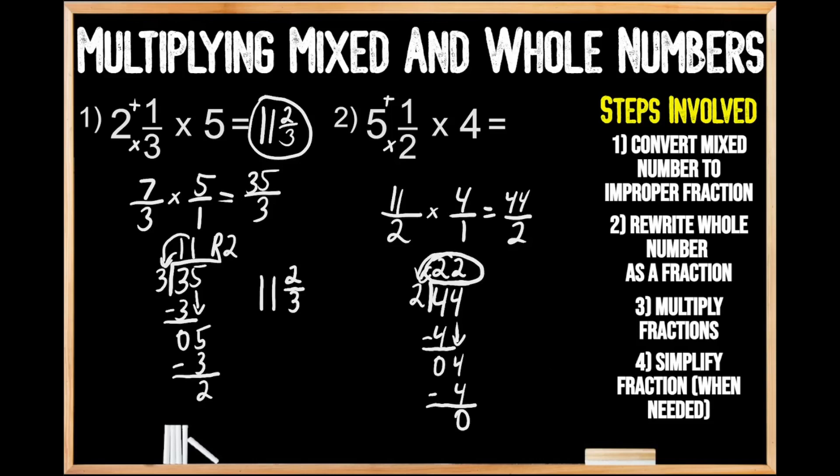So when we multiply five and one half times four, we get the whole number 22. Hopefully by now you understand the steps involved when multiplying a mixed number by a whole number. Help make math less complicated by smashing those like and subscribe buttons. As always, enjoy today's math journey.